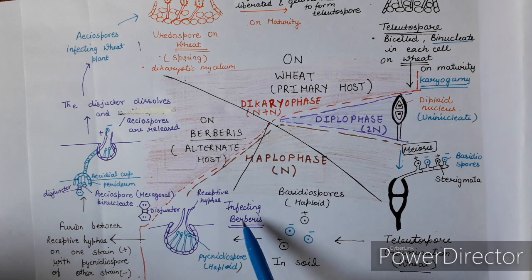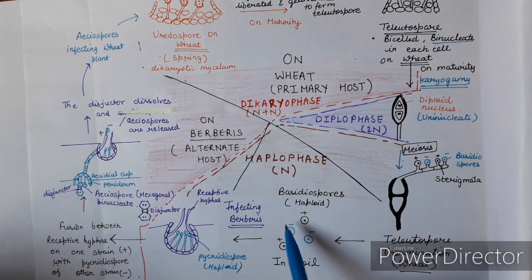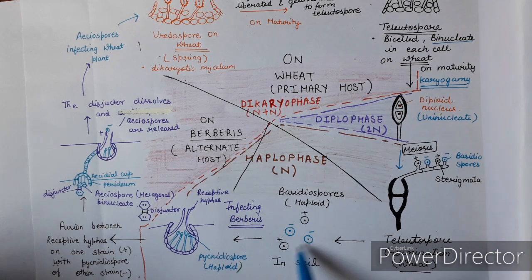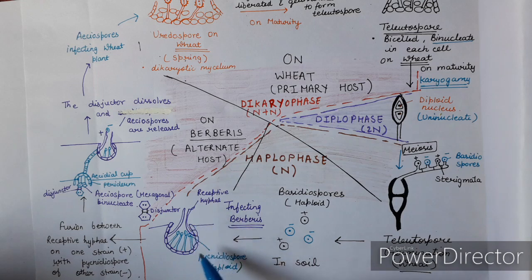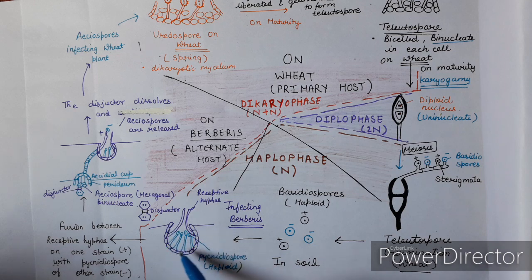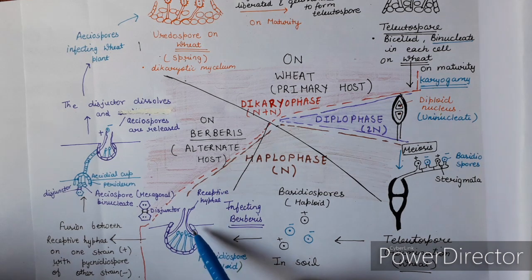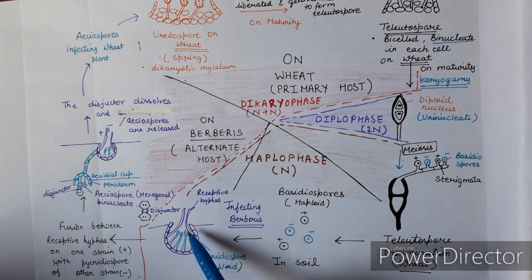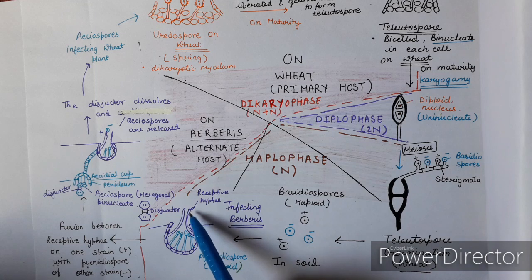These basidiospores infect the alternate host, Berberis vulgaris. You can see the symptoms on the upper surface of the Berberis vulgaris leaf. The basidiospores aggregate together on the upper surface and form a cup-like structure called the pycnidial cup. The pycnidial cup consists of receptive hyphae and pycnidiospores.